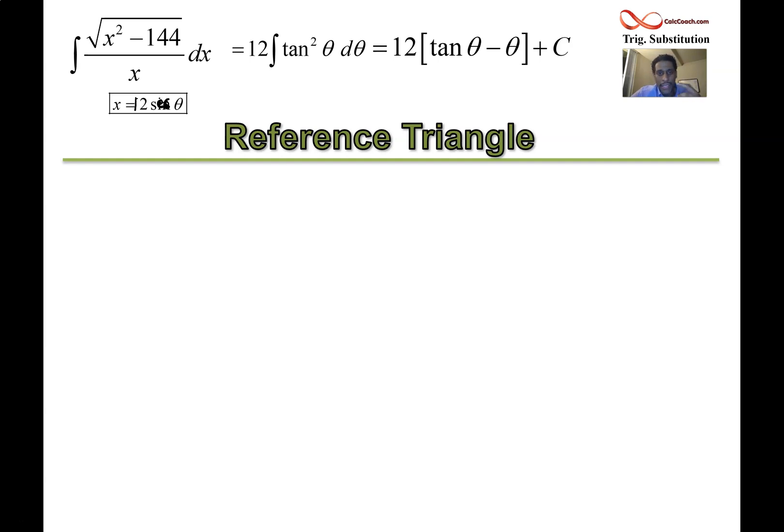What is the reference triangle all about? It is all about using the original trig sub, 12 secant theta, solving for the trig, and that represents a ratio of sides on a right triangle. With theta as the base angle, secant is the flip of cosine. If cosine is adjacent over hypotenuse, then secant is hypotenuse over adjacent. Your hypotenuse should be x. Your adjacent should be 12. The missing side is your opposite side, and it's going to be the radical x squared minus 144.